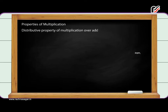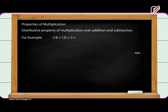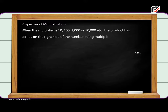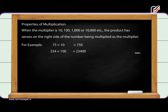Distributive property of multiplication over addition and subtraction. For example, the sum of 18 and 15 multiplied by 5 is equal to the sum of the product of 18 into 5 plus 15 into 5; and the difference of 18 minus 15 into 5 is equal to the difference of the product of 18 into 5 and 15 into 5. When the multiplier is 10, 100, or 1000, the product has zeros on the right side of the number being multiplied. For example, 75 into 10 is equal to 750; 234 into 100 is equal to 23,400; 1692 into 1000 is equal to 16,92,000.